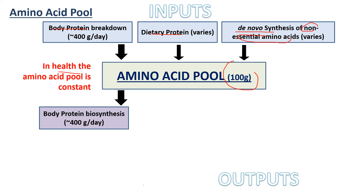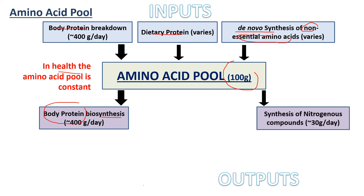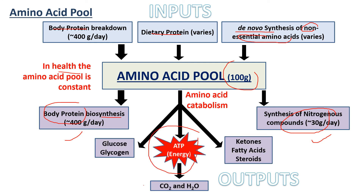As for the outputs, first we can use amino acids in the synthesis of body proteins. Second, we can use them to synthesize nitrogenous compounds such as nucleotides — these two are anabolic reactions. On the other hand, we can break down amino acids and use the carbon skeleton for energy production. When there is a surplus of building blocks and energy, amino acids can be converted into glucose and glycogen for storage, or into fatty acids and steroids. Under starvation, amino acids can be converted into ketone bodies to feed your brain and muscle.